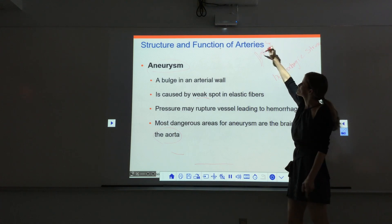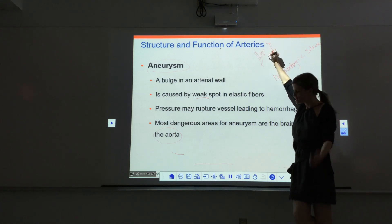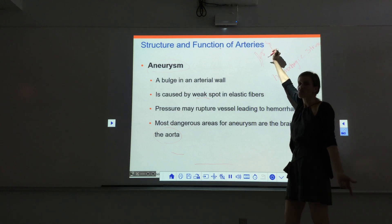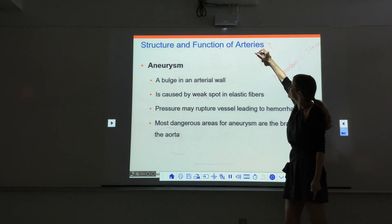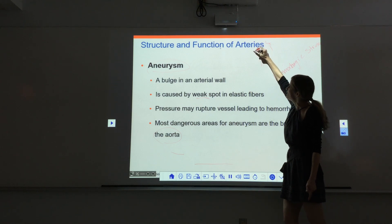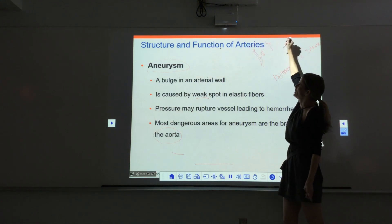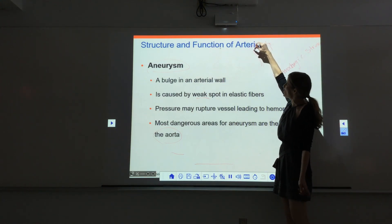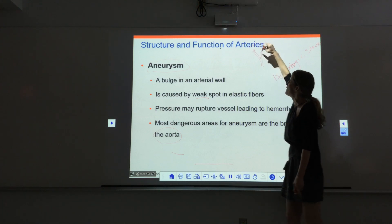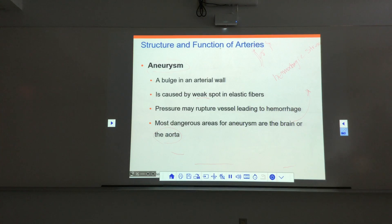A thrombotic stroke is caused by a clot — a thrombus. If a clot breaks off, flows through the vessels, gets lodged in a tiny vessel and blocks it, that area gets no blood. A thrombotic stroke is caused by a thrombus, as opposed to a hemorrhagic stroke caused by a ruptured aneurysm. It's incredibly important to tell the difference between the two.